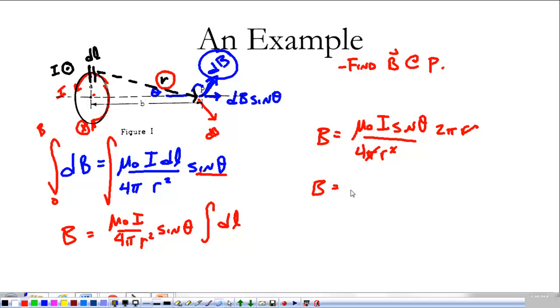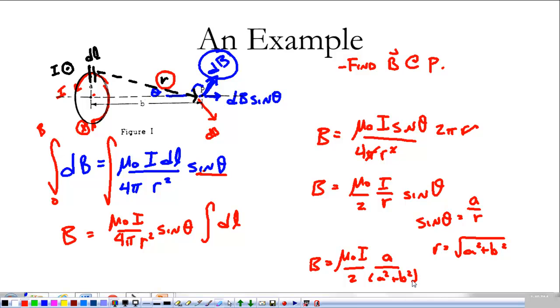We have to plug in for sine theta. Sine theta I know is a over r, and I know that r is the square root of a squared plus b squared. So really, once we do it all, mu zero I over two times a over (a squared plus b squared) to the three halves. We just did the Biot-Savart law. We may look at a more complicated example in class, but this is what we need to know how to do.